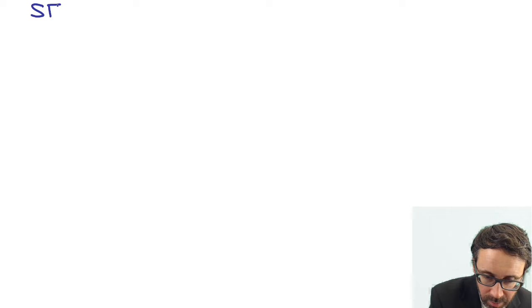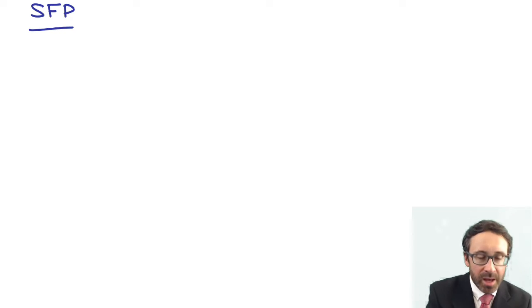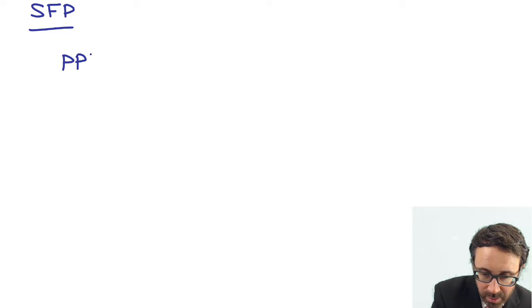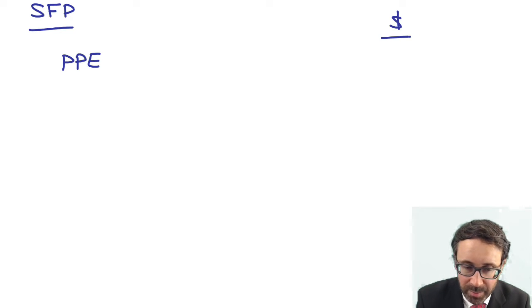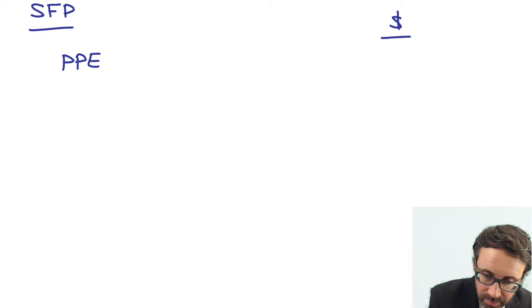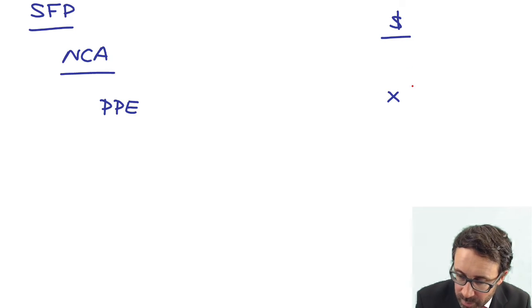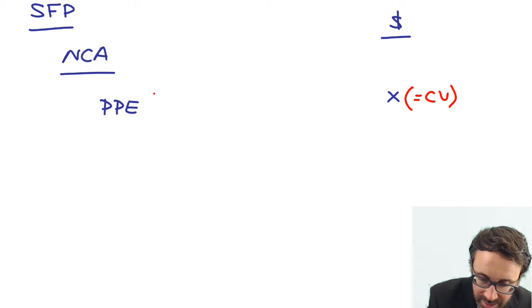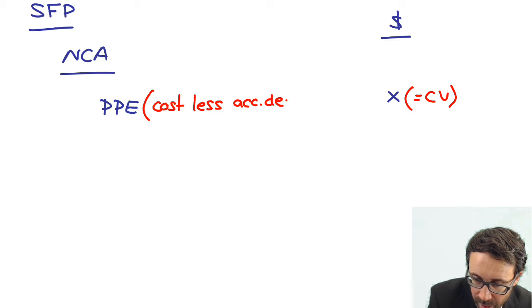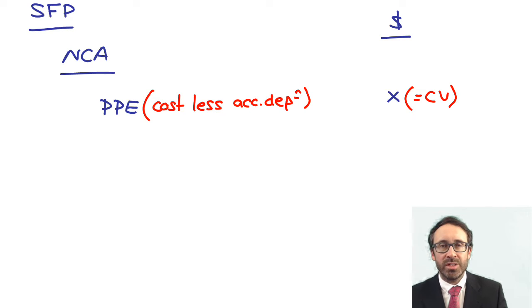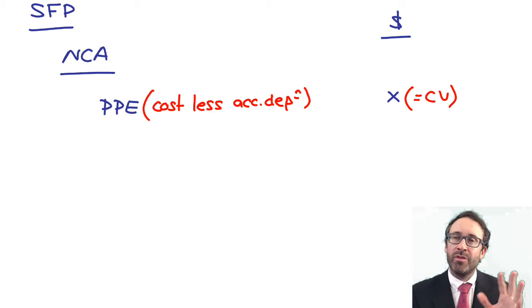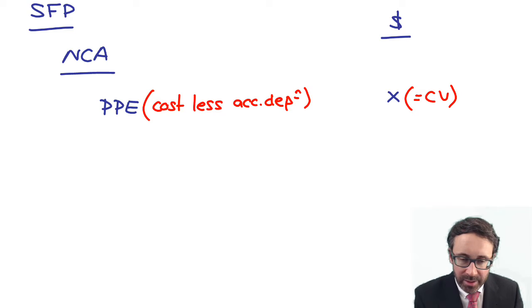If we take our statement of financial position and look at property, plant and equipment - we should put that within non-current assets. Within your non-current assets, we have property, plant and equipment. That property, plant and equipment is held at its carrying value, which will be based upon cost less accumulated depreciation. It could be held at the revaluation model, in which case it will be at fair value less accumulated depreciation.